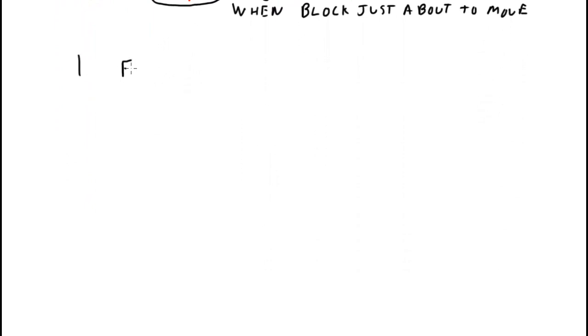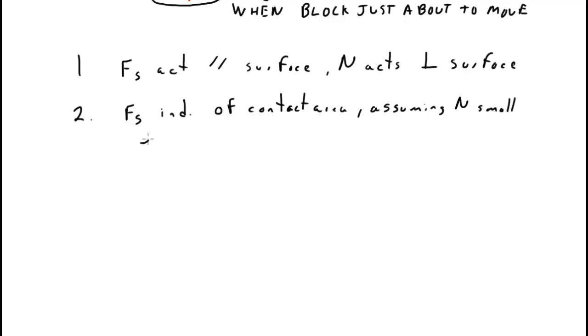So there's a couple points we need to make about this. Point number one is that F or FS acts parallel to the surface, while N acts perpendicular to the surface. The second point is that FS is independent of contact area, assuming N is small enough that deformation does not occur, and all the problems that will be working, we can check that off. That's always going to happen.